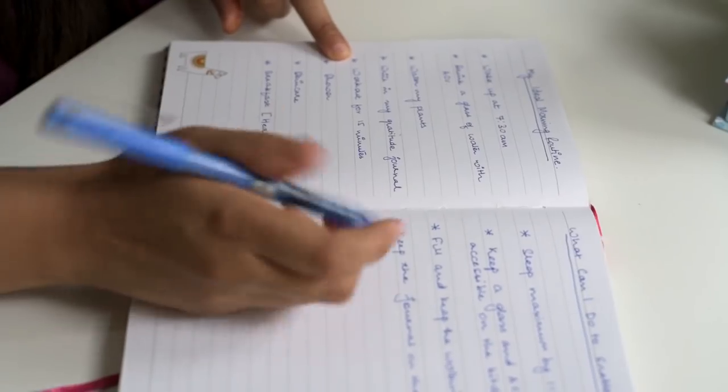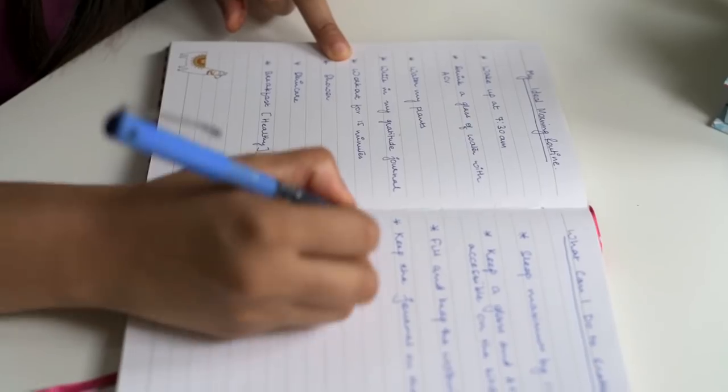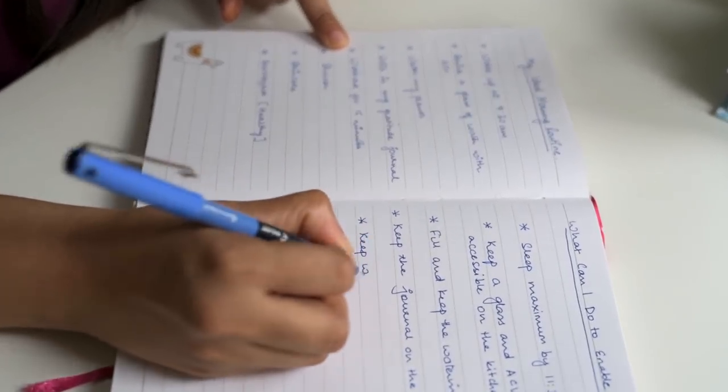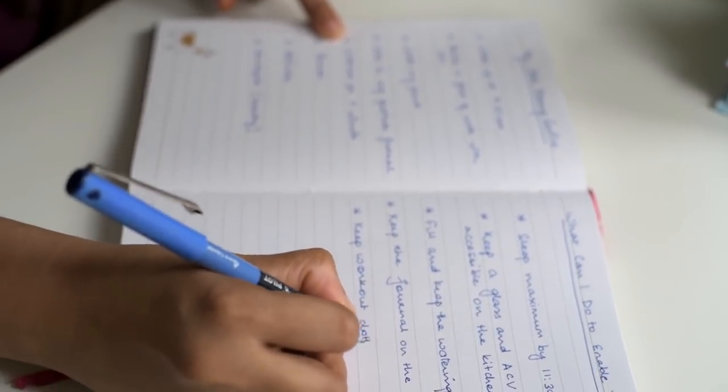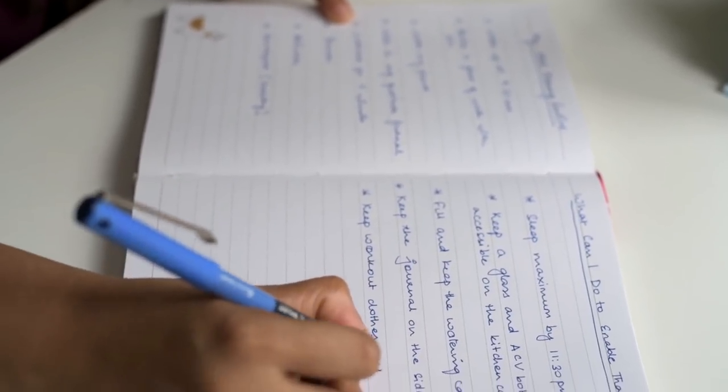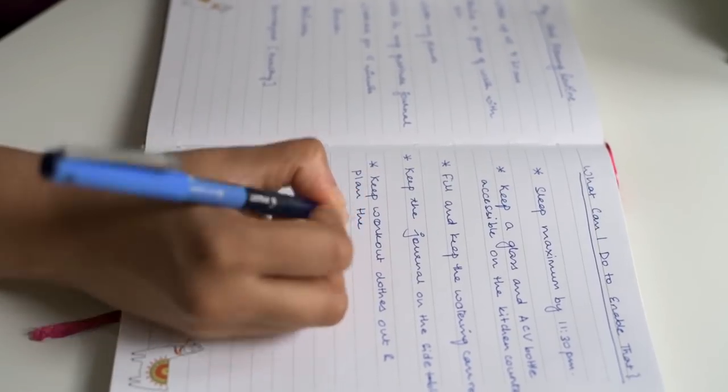Next, let's say working out is on your ideal morning routine list, so a good enabler for that would be to keep your workout clothes and gear ready the night before. You can also choose to plan your workout session in advance, so maybe you can save a few YouTube videos that you want to follow that particular morning.